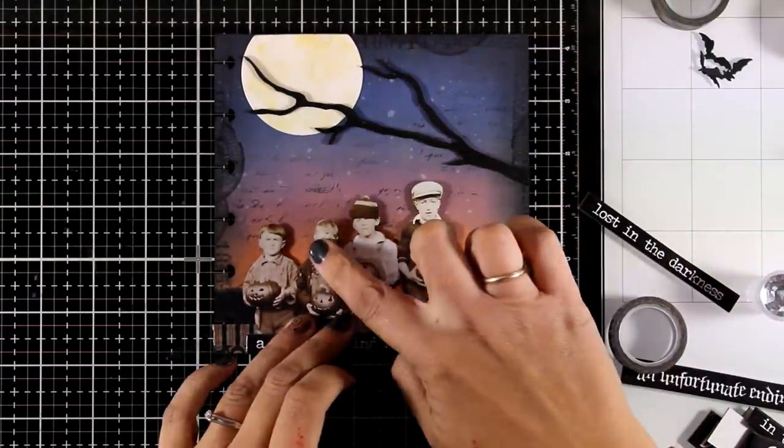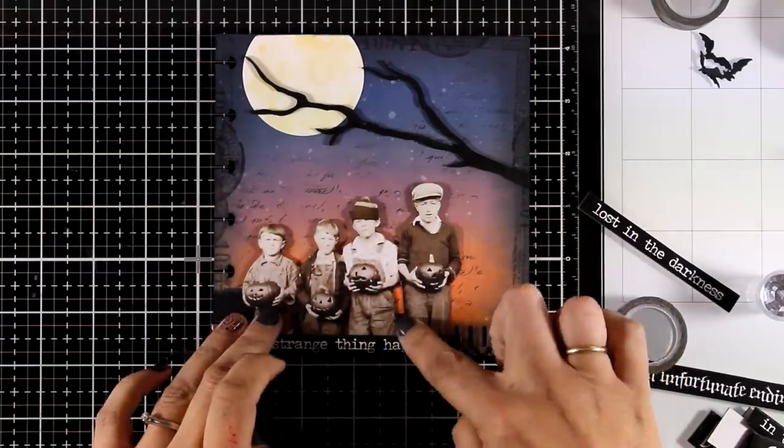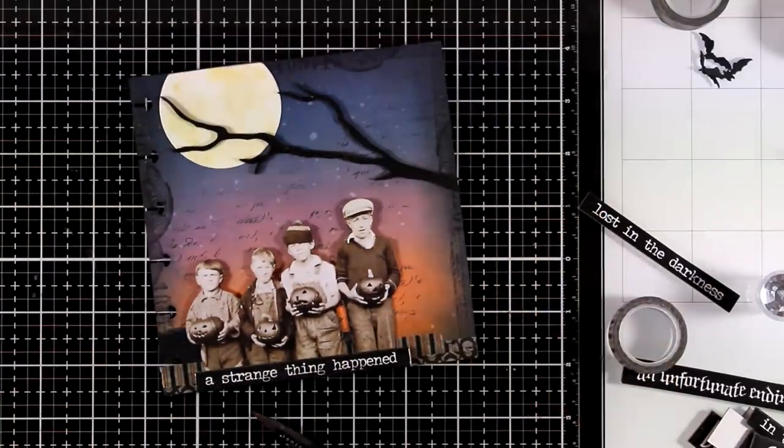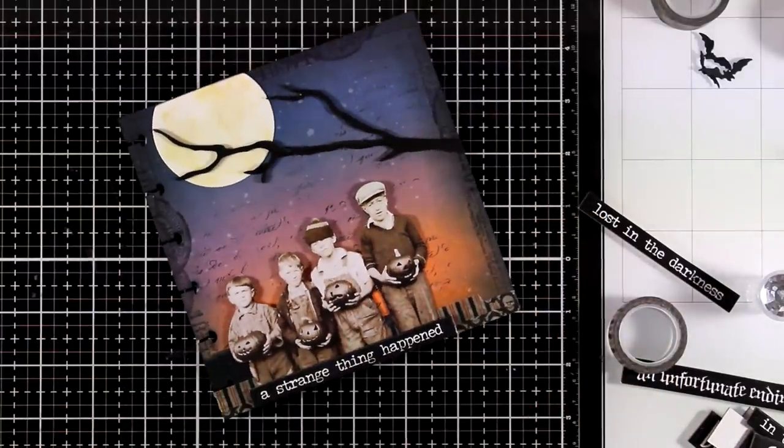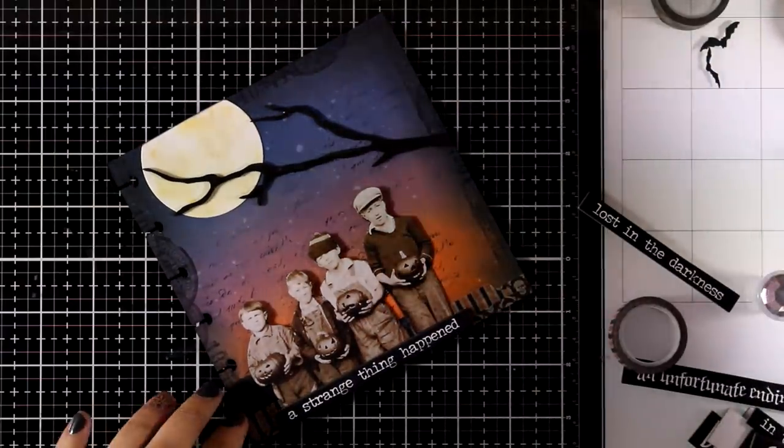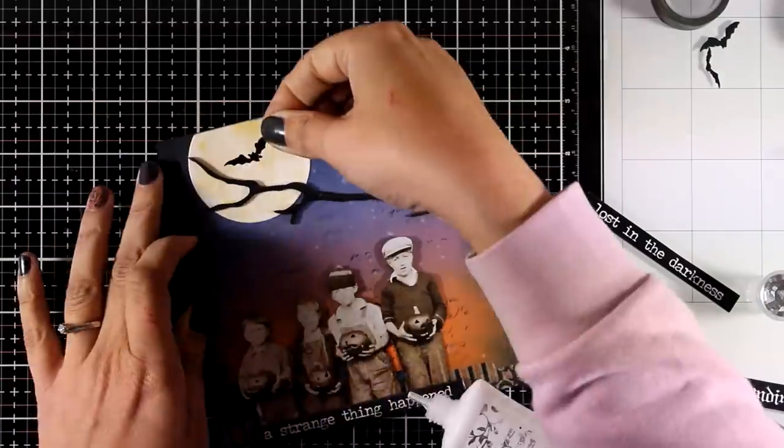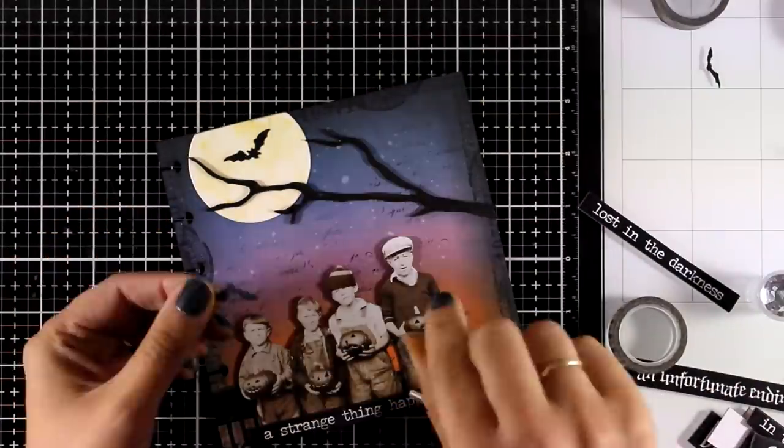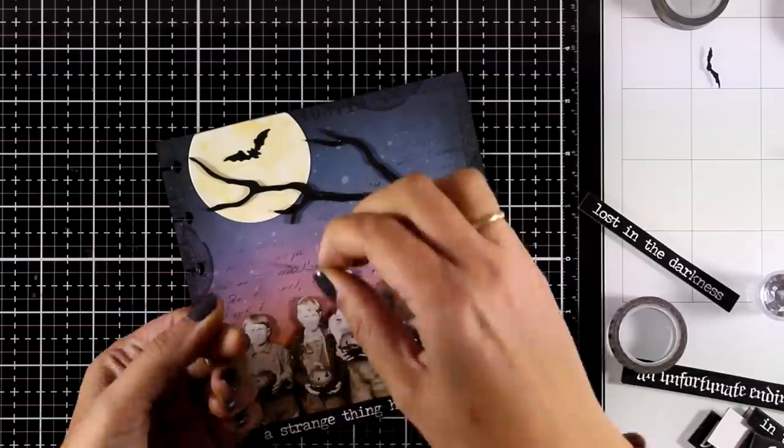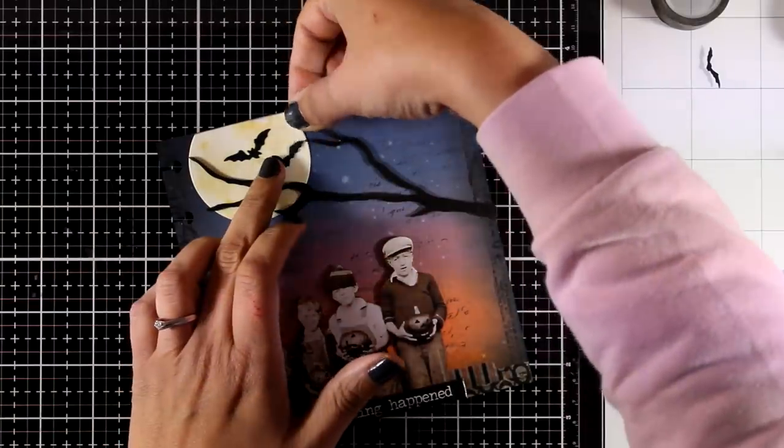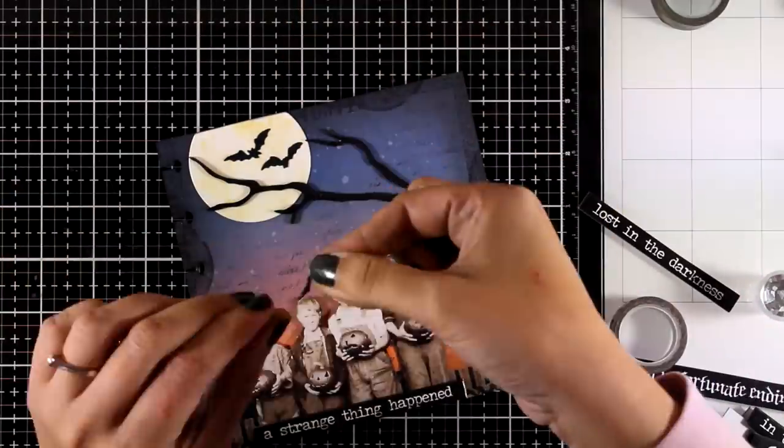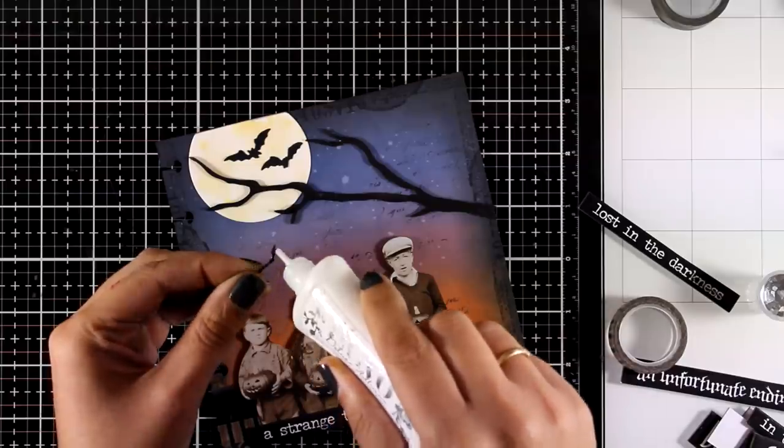I love how my little scene is coming together here. Now it's time to add some finishing touches to take it a step further. So I will stick down the bats and I have cut out three of them. Again I'm just using my white Nuvo glue for the whole project today. I had it on my table and I thought why not. Of course you can use your gel medium or any other type of glue that you like.